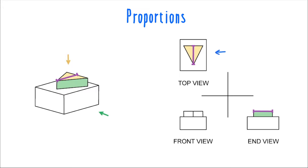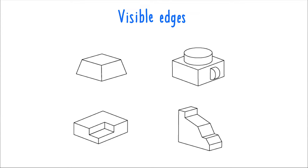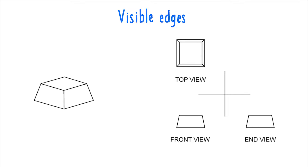Let's talk more about visible edges. Visible edges and the overall borders of an object are depicted as solid lines. Here are some examples of common top front end objects. In this first one, we have a very symmetric object. In the structure, these edges would be depicted in the front view, these would be depicted in the end view, and all of these would be shown in the top view.